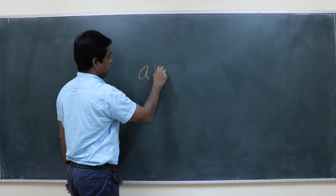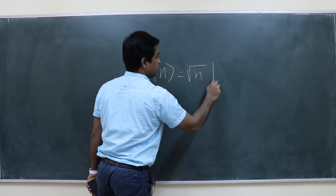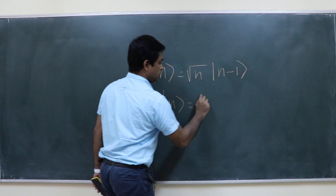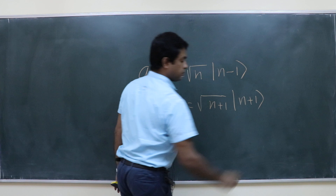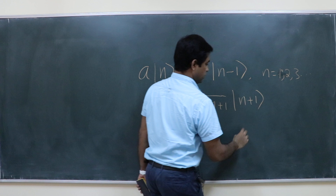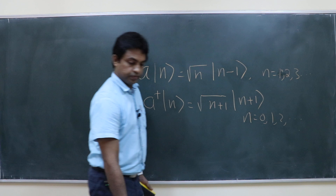Basically, in the last class we found that a acting on ket n is root n ket n minus 1, and a dagger acting on ket n is root n plus 1 ket n plus 1. So in this case n is equal to 1, 2, 3 etcetera; this case n is equal to 0, 1, 2 etcetera.